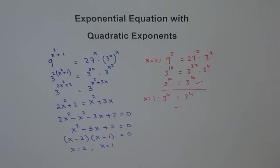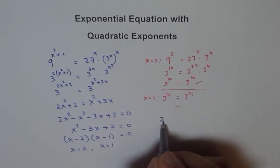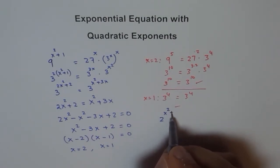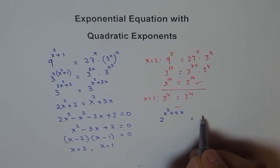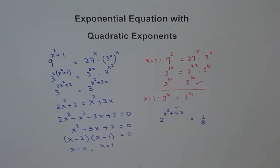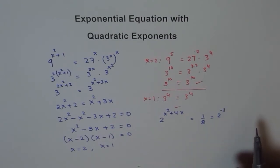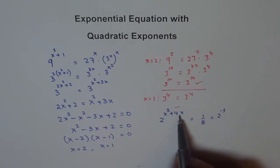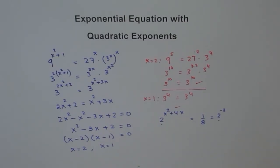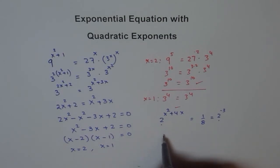Let me give you a practice question to try on your own. The question is: 2 to the power of x squared plus 4x equals 1 over 8. The hint is you need to write the right hand side in the form of base 2. We can write 1/8 as 2 to the power of minus 3. So x squared plus 4x should equal minus 3, giving a quadratic equation.